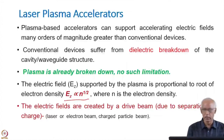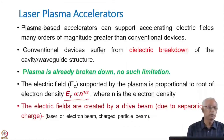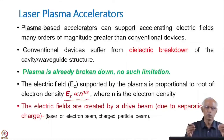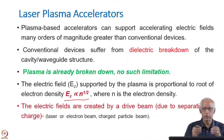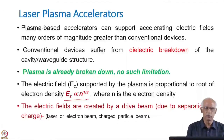The electric fields are created by a driver beam, which could be either a laser, an electron beam, or other particle beams. This happens due to separation of charges — in plasma, microscopically it is neutral, meaning positive and negative particles are roughly equal. However, in laser plasma accelerators there is a separation of electrons from the positive ions, and that is what is responsible for the generation of the electric field.